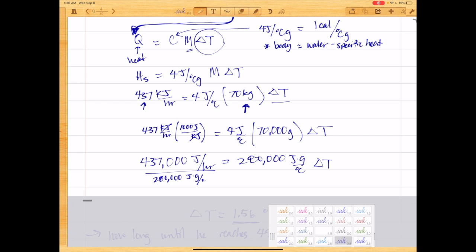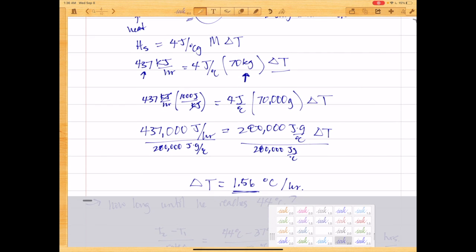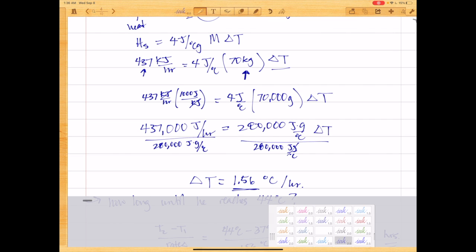What we get is delta T turns out to be, and of course the units cancel, turns out to be 1.56 degrees Celsius per hour. This is how much the difference in temperature is. The next question is,